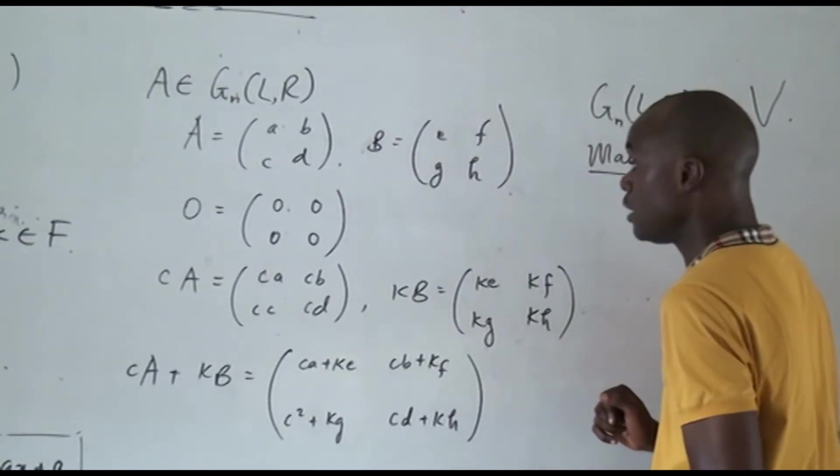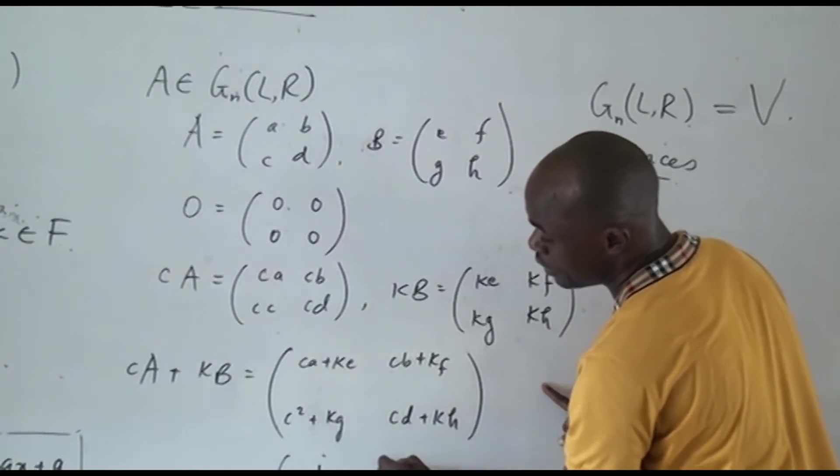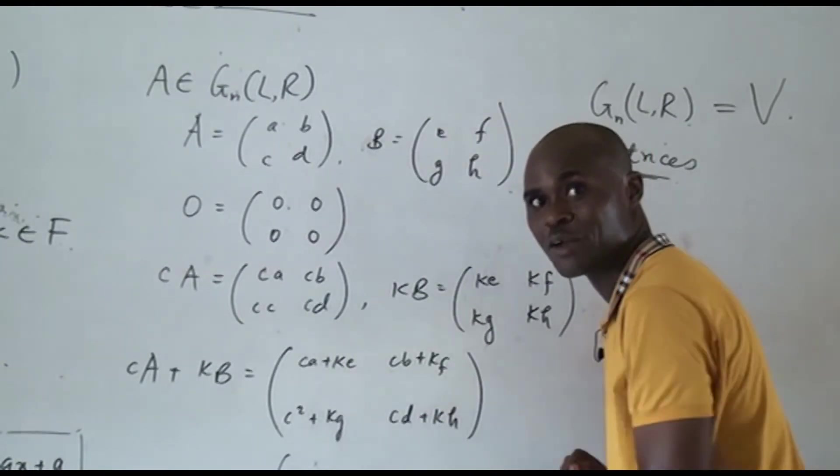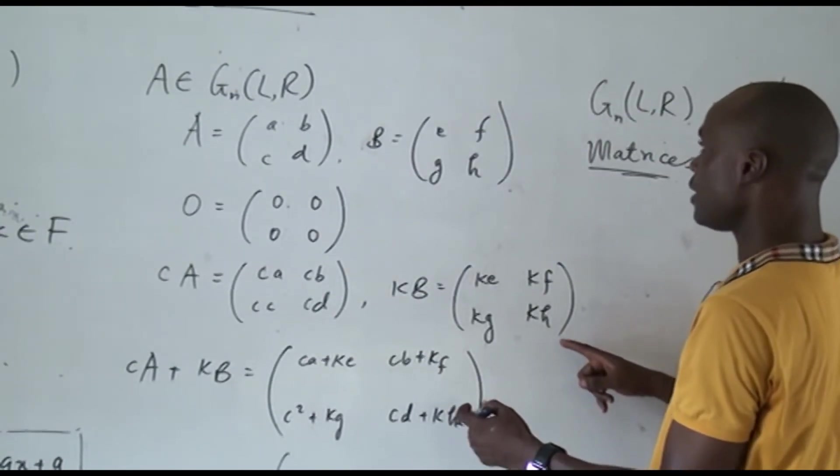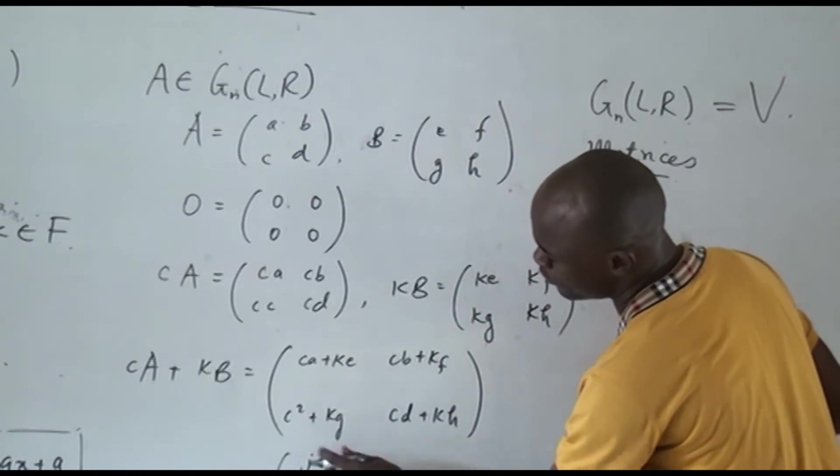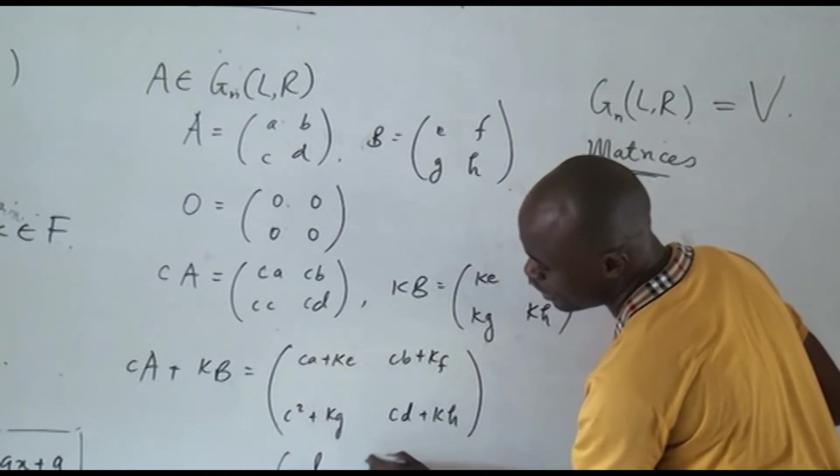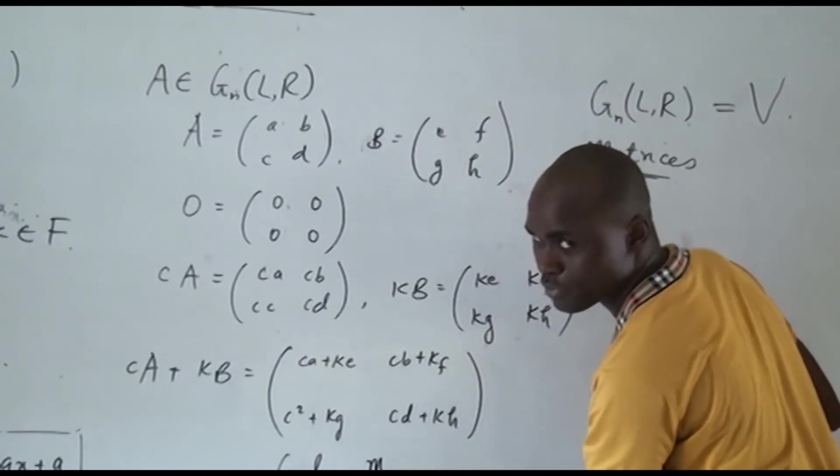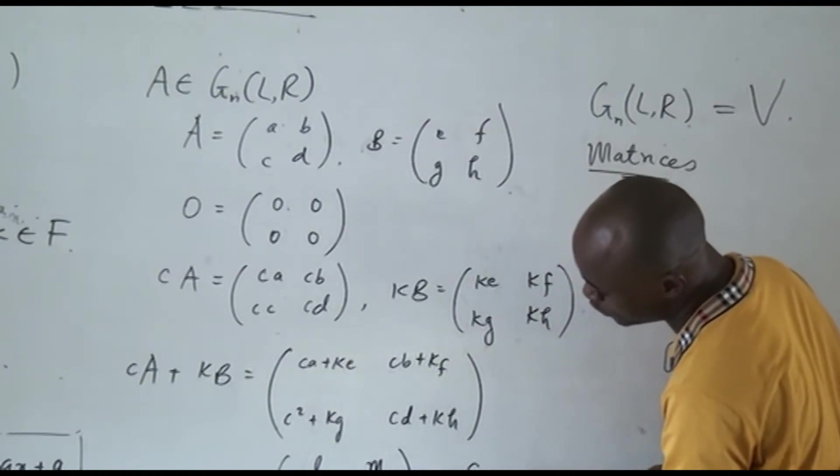These are just numbers. I can represent this by different variables, so this is J, this is L, M, N, not O, but P. So, you see, this is still a member of G N L R. Beautiful.